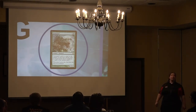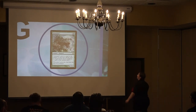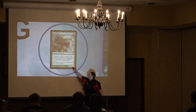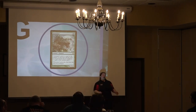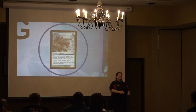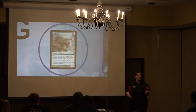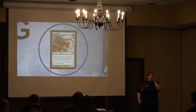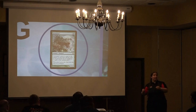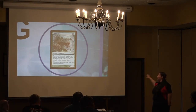Tarmogoyf says its power is equal to the number of card types among cards in all graveyards, and its toughness is equal to that plus one. That is something that would normally just be printed on the card as a number — not a star. There are other characteristic-defining abilities that don't apply to power and toughness, such as if a card says 'this card is blue.'